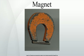A magnet is a material or object that produces a magnetic field. This magnetic field is invisible but is responsible for the most notable property of a magnet: a force that pulls on other ferromagnetic materials, such as iron, and attracts or repels other magnets.